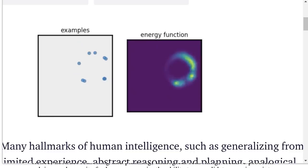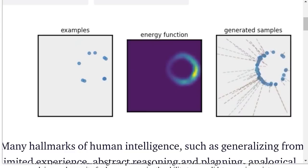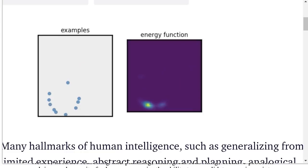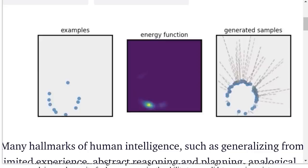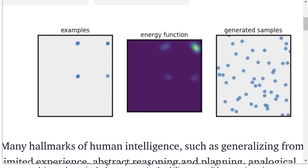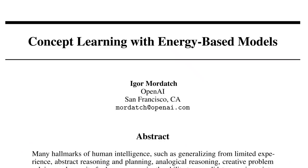What you're seeing here is an energy-based model that learns the concept of a shape from a demonstration on the left. On the left you can see a demonstration of data points sampled from a shape — in these cases circles or squares — and then the corresponding energy function that the model infers from that. It can then replicate that shape on the right using that energy function. The paper we're going to analyze today is called 'Concept Learning with Energy Based Models' by Igor Mordatch of OpenAI.